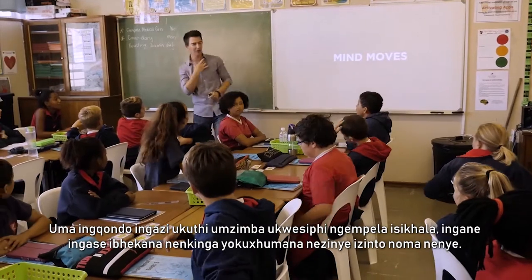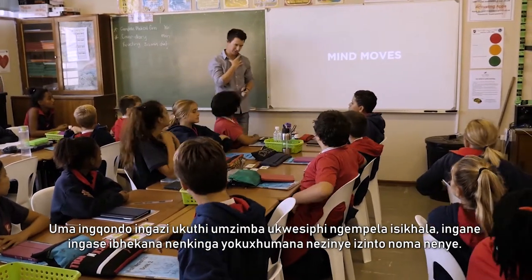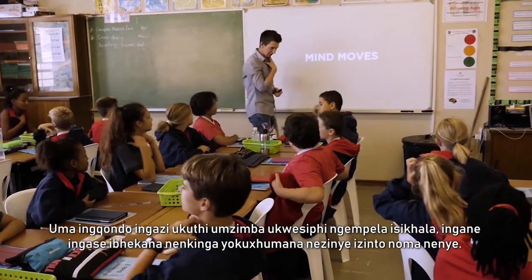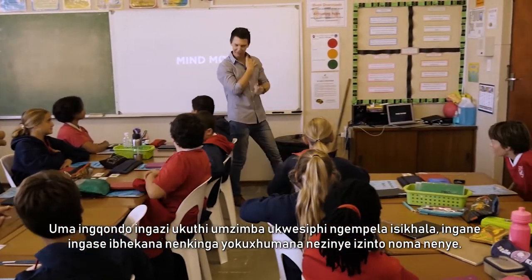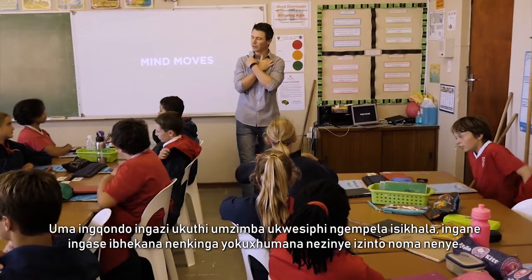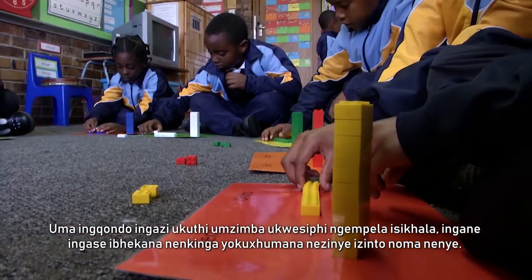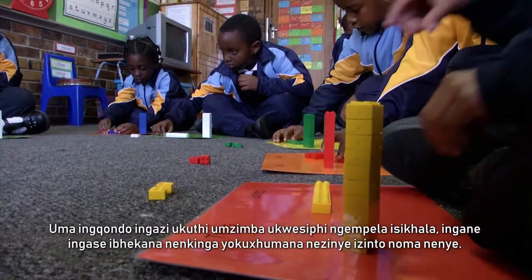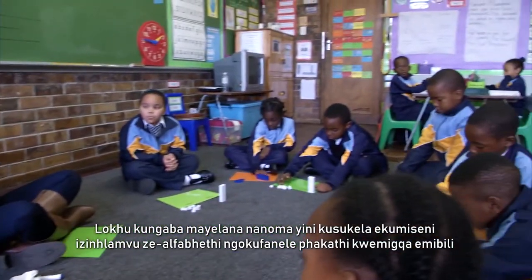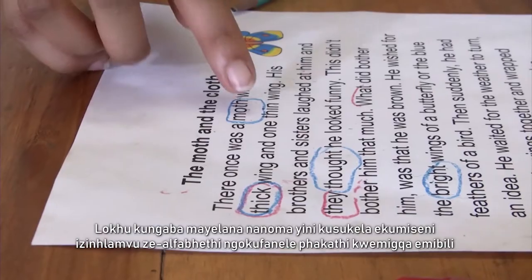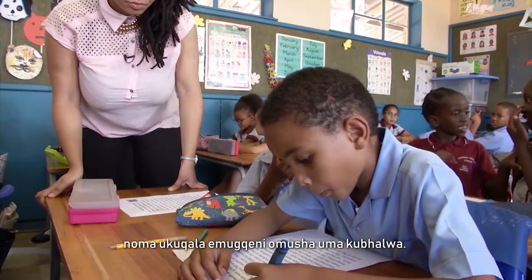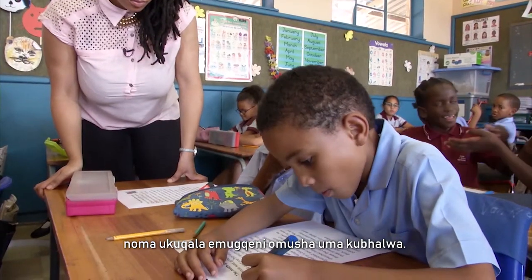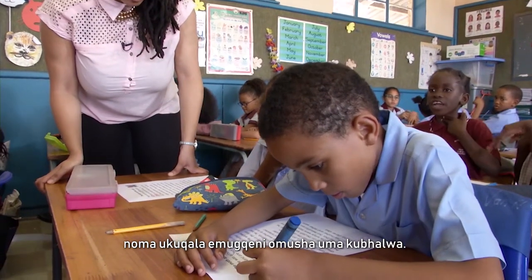If the brain is not aware of exactly where the body is in space, a child will almost always struggle to relate other objects to one another. This can relate to anything from placing letters accurately between two lines, or starting next to the margin when writing.